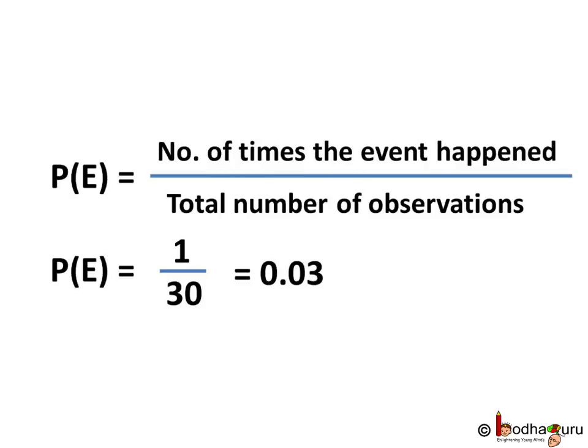Thus we see the probability of Aman coming late is very low, and we think like that when we try to guess something about someone or some event in our day-to-day life.